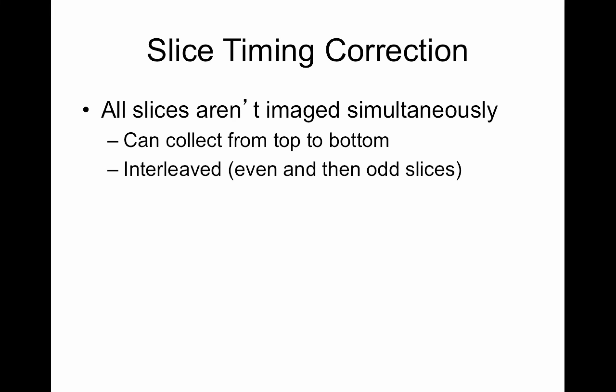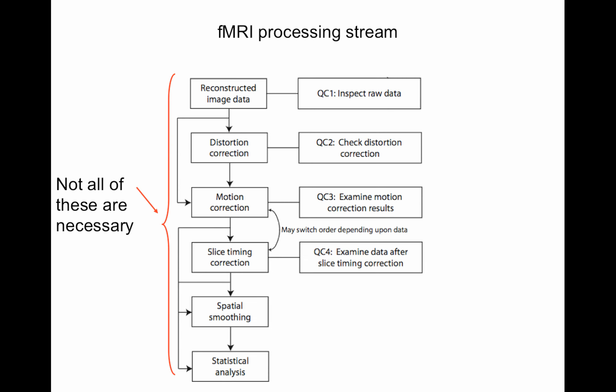Slice timing correction is what I want to focus on here. I skipped distortion correction, which I explained in the other video — I only go back and do that if my registration failed. I'll talk about the BBR registration, and once you see how that works you'll understand why it might fail if you have distortion in the data.